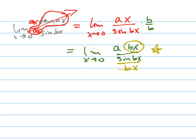So now that I have that, I'm going to use the other formula that says the limit as x goes to 0 of sine x over x just equals 1.